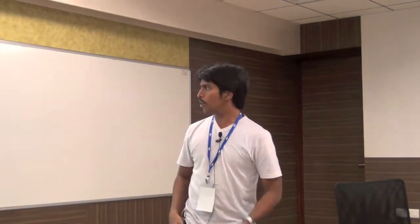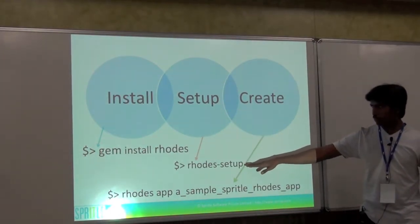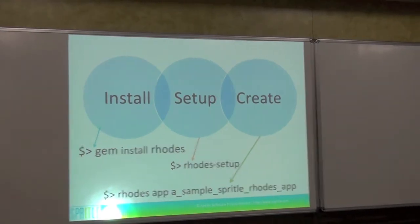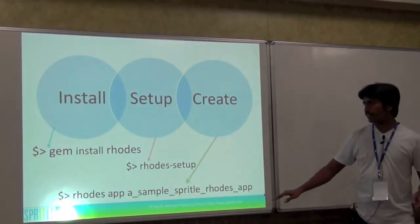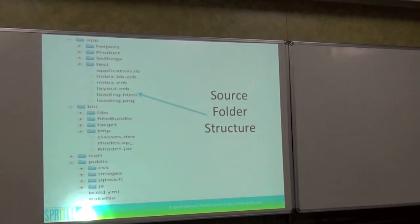You would install RhoMobile by saying 'gem install rhodes', then run 'rhodes setup'. What this does is create a link to your iPhone simulator, Android simulator SDK, iPhone SDK, Android SDK, BlackBerry, and Windows Phone. If you want to create a new application, all you have to do is say 'rhodes app sample_spritely' or something like that. This will create a template for the corresponding platform — a template like this which has app, bin, icon, public folders. Those who have used Ruby on Rails would relate — a public folder, an app folder, and so on.